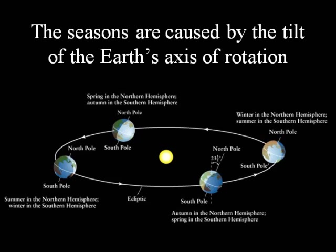Starting on the right side of the diagram shown here, we have the northern hemisphere tipped away from the sun, so it receives just a little sunlight, not very strong, and we have the winter season.